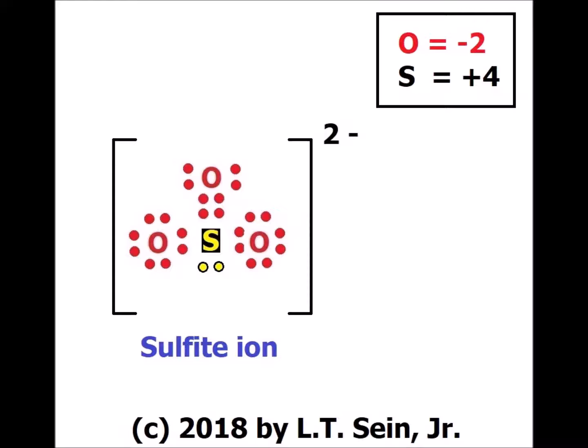For sulfite ion, SO₃²⁻, each oxygen brings in 6 electrons and sulfur brings in 6, giving 24 electrons. We must add 2 more electrons to account for the −2 charge. We can satisfy the octet rule for both sulfur and oxygen, with one resonance structure showing two single bonds and one double bond between sulfur and oxygen. In all resonance structures, sulfur retains a lone pair of 2 electrons, giving sulfur an oxidation number of +4 in sulfite ion.